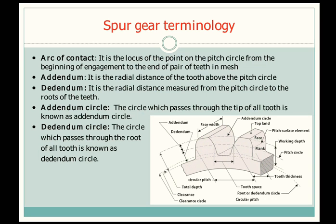Next is dedendum. It is the radial distance between the pitch circle and the roots of the teeth. In the figure it is shown — it is the radial distance from the pitch circle down to the root of the teeth, that is the bottom point where the teeth end.